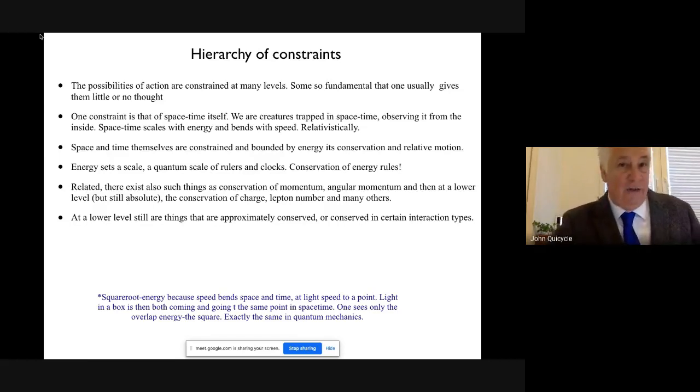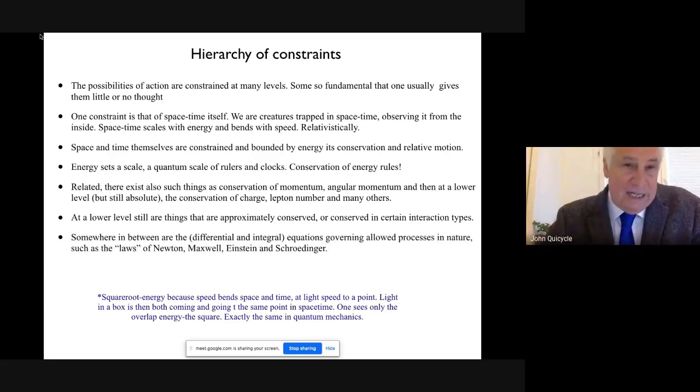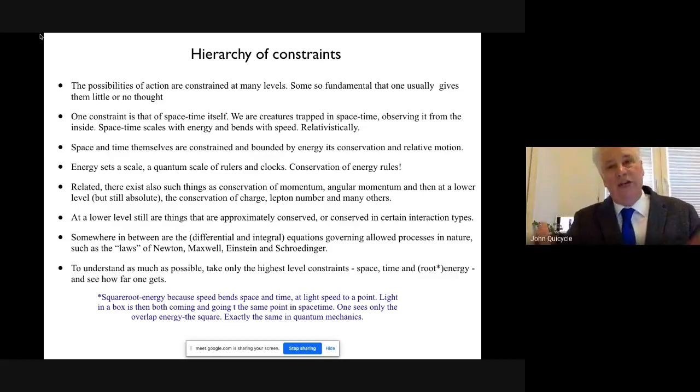At a lower level still, there are other constraints that are approximately conserved. They might be conserved within a particular kind of interaction and not in another, or they might only be approximately conserved. Somewhere in between all of these things are the equations I talked about before - the equations of science, the differential integral equations governing allowed processes, allowed transformations in nature, such as the so-called laws of Newton, Maxwell, Einstein and Schrodinger for quantum mechanics. These are a constraint as well. The equations constrain the kind of transformations that can happen. Sitting on top of that are such things as conservation of energy, which constrains absolutely how even the mathematics works. It has to be unitary.